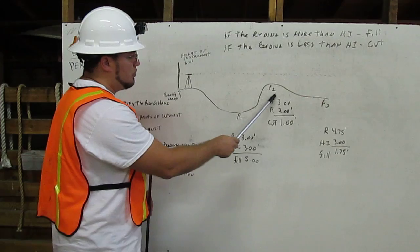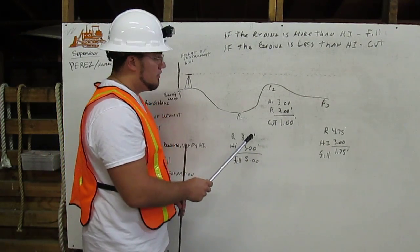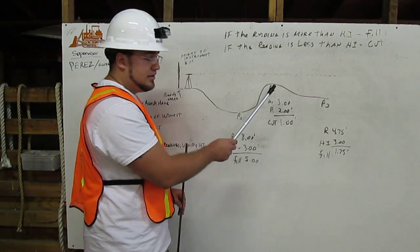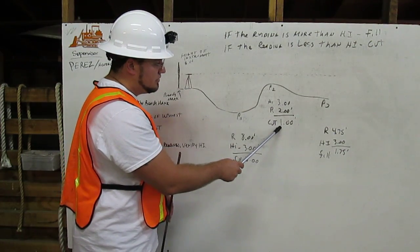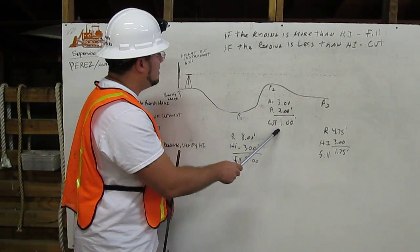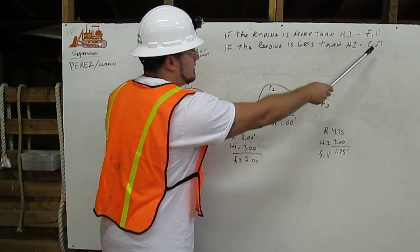For our second point, our reading was 2.00 feet. Our height was 3.00 feet. We're going to subtract 2 feet from 3 feet. That equals 1.00 feet. And it's going to be cut because if the reading is less than the height, it is cut.